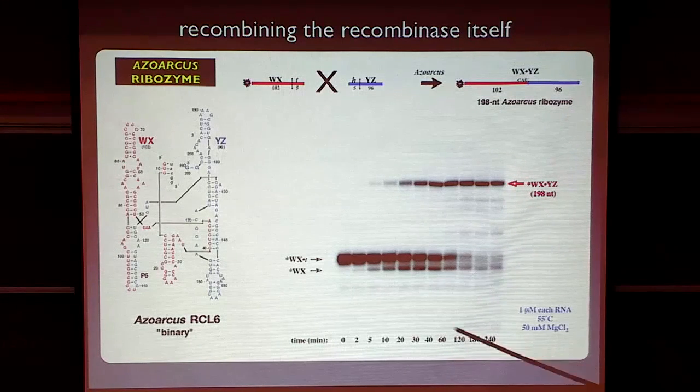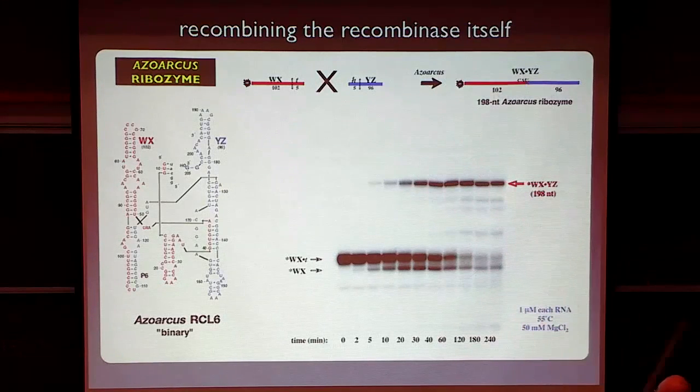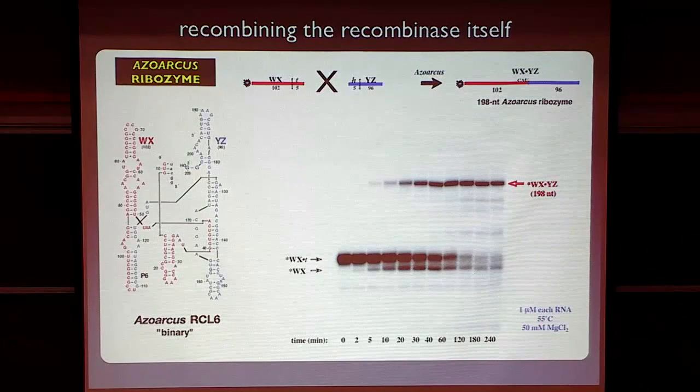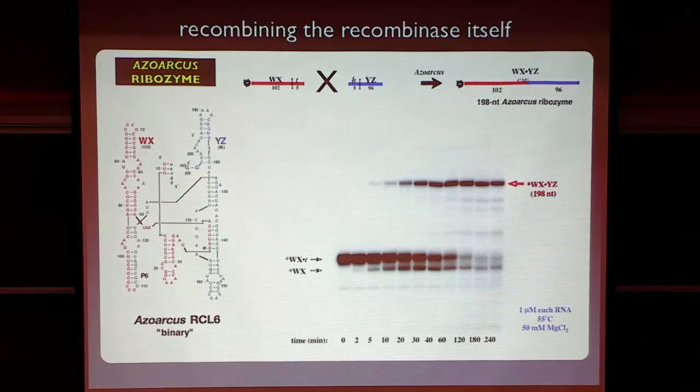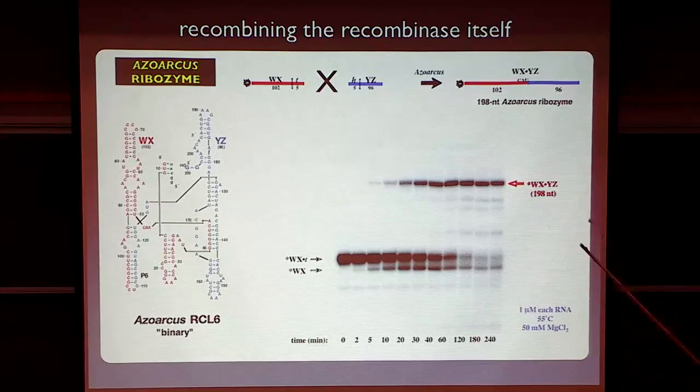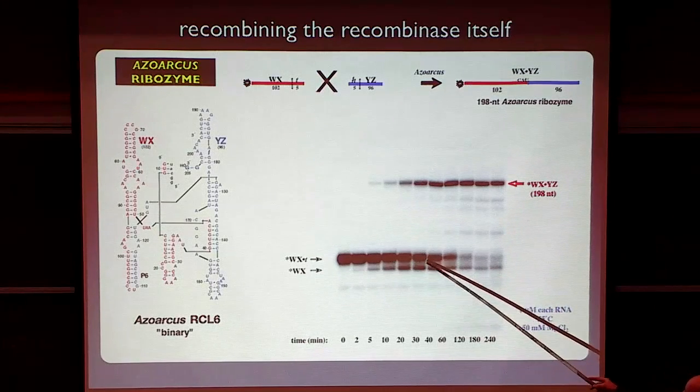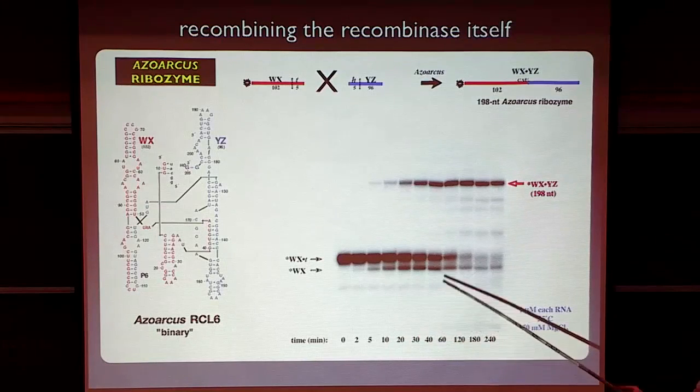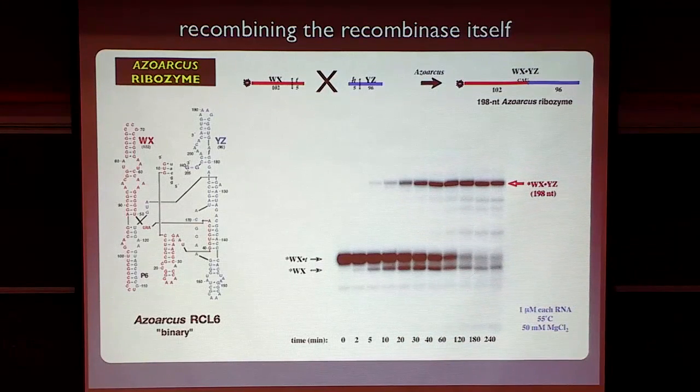And the idea was that we could take the left-hand half and the right-hand half, throw in a little bit of the full-length ribozyme, and watch it make itself from its own pieces. And in fact, this is the gel image from that experiment where the five prime half is radio-labeled, and after a couple of hours, it makes the full-length product.